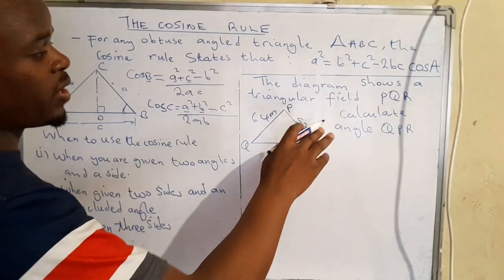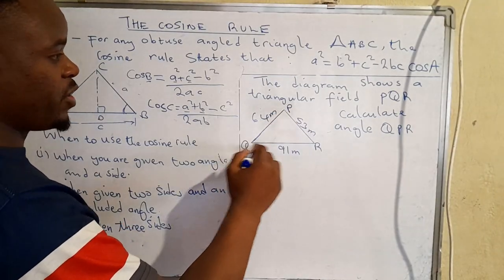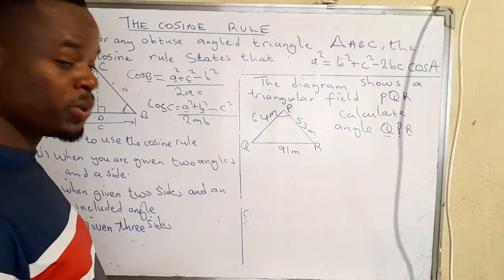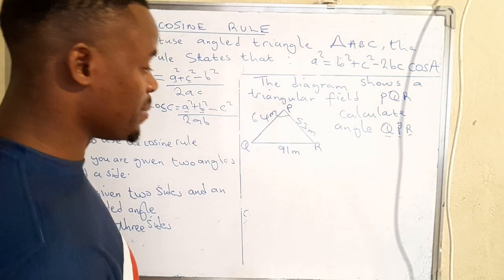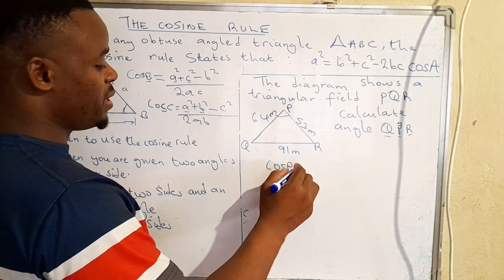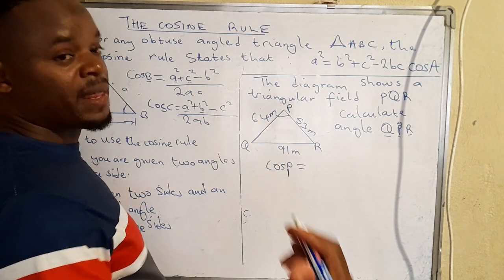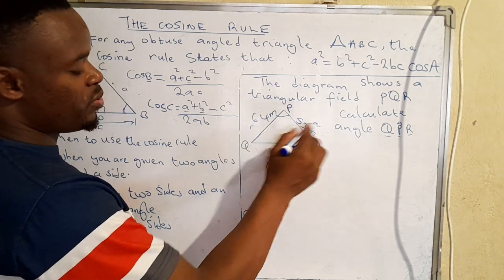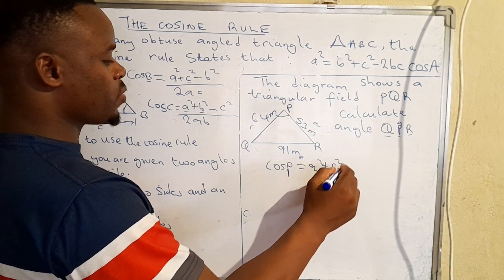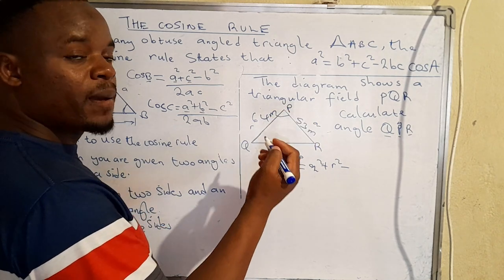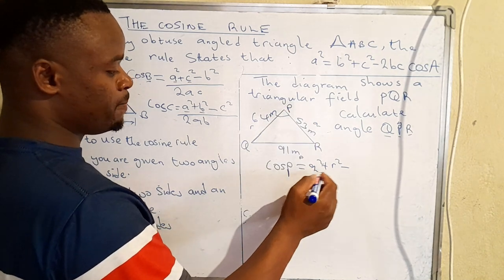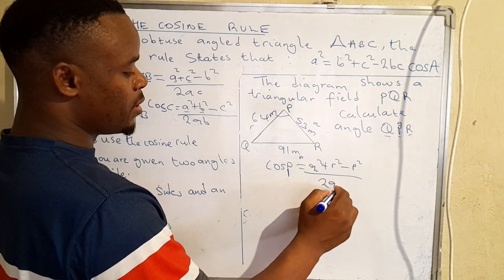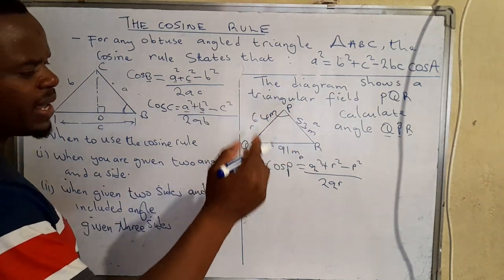Let's go ahead and apply the cosine rule to this problem. The diagram shows a triangular field PQR. Calculate angle QPR — that is the angle we want to determine. So what you do is say cos P equals the other two sides. Side p is opposite vertex P, side r is opposite vertex R, and side q is opposite vertex Q. So that gives us q squared plus r squared minus p squared.